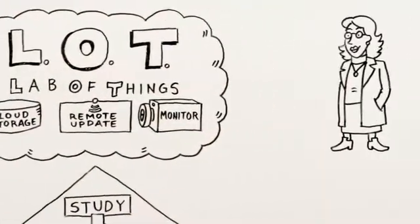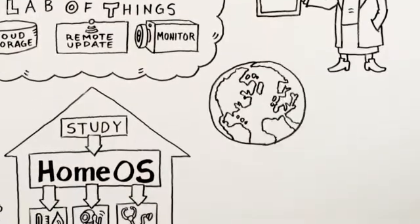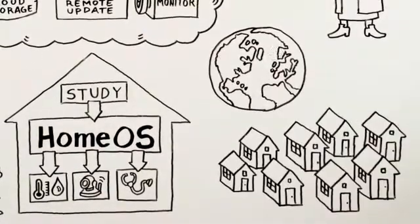Marie is another scientist studying aging in place. Like Albert, she uses Lab of Things to deploy sensors in many homes that she can easily monitor.